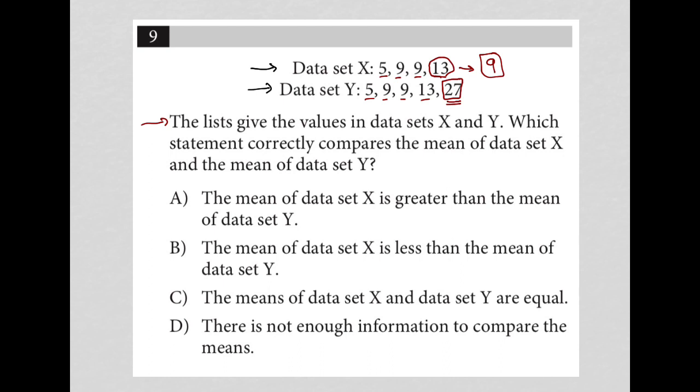I must have typed something wrong. Let's try that again: 5 + 9 + 9 + 13 + 27, and then divide it by 5. I get 12.6 as the mean.